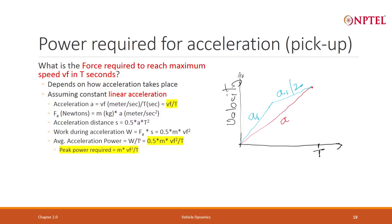That is the peak power required. Because when the velocity is Vf, the power is mv²f by t — but at that time the vehicle is actually traveling at speed Vf. So the peak power is mv times the force term.